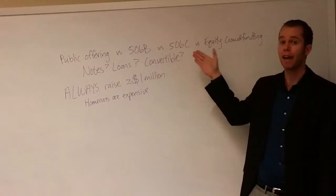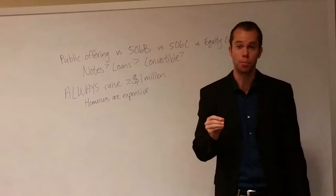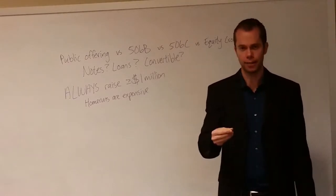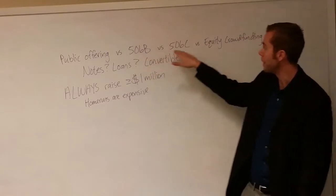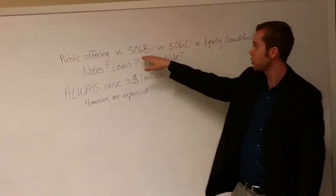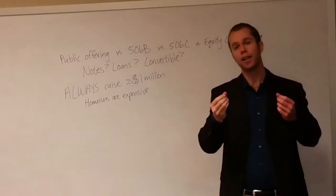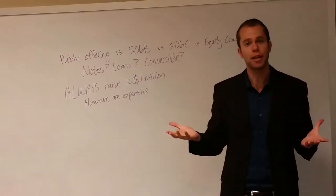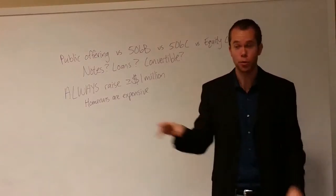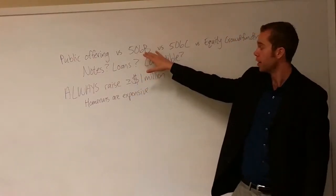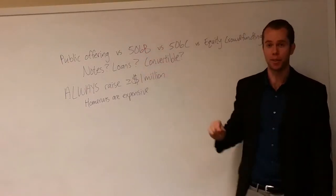Also with 506B you don't need a third party to verify that they're an accredited investor as you would with 506C. With 506C they actually have to go to a lawyer or accountant to prove their value — to prove that they would not be hurt by investing in something like this. Another key difference: with 506B you cannot generally solicit. You wouldn't be able to make a video, do an advertisement, or reach outside anyone that's somehow affiliated with your social circle.